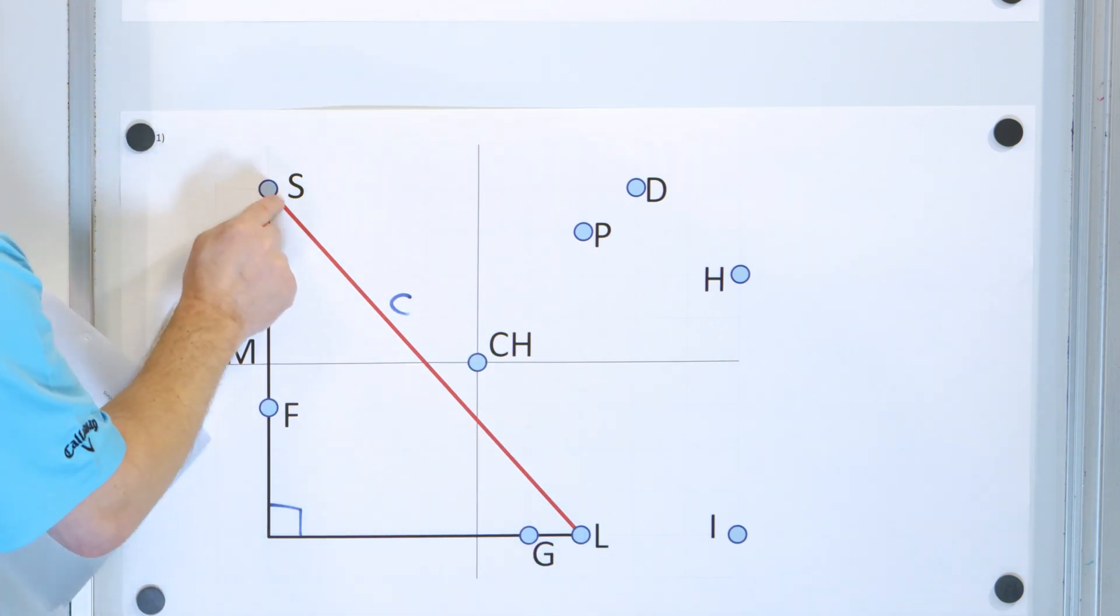then the straight line distance between them would actually be 10 kilometers as we've shown mathematically here. Let's take this one down and solve our next problem.